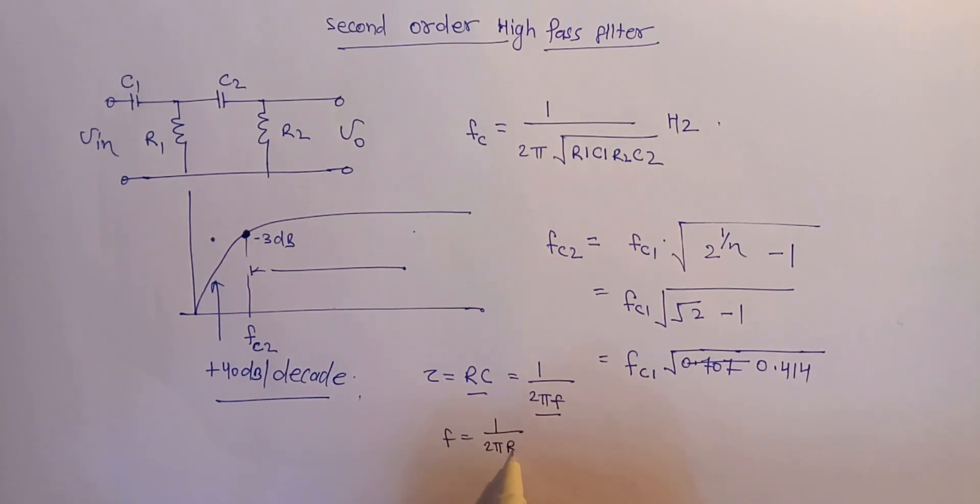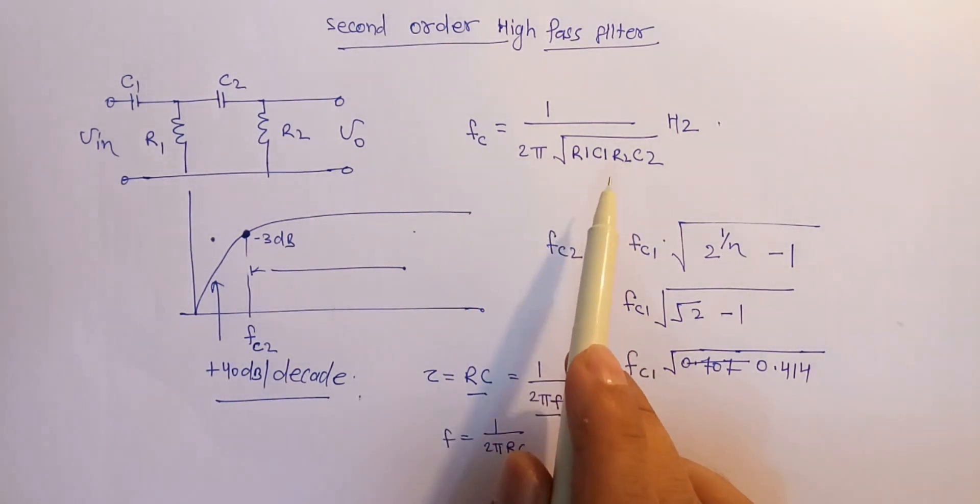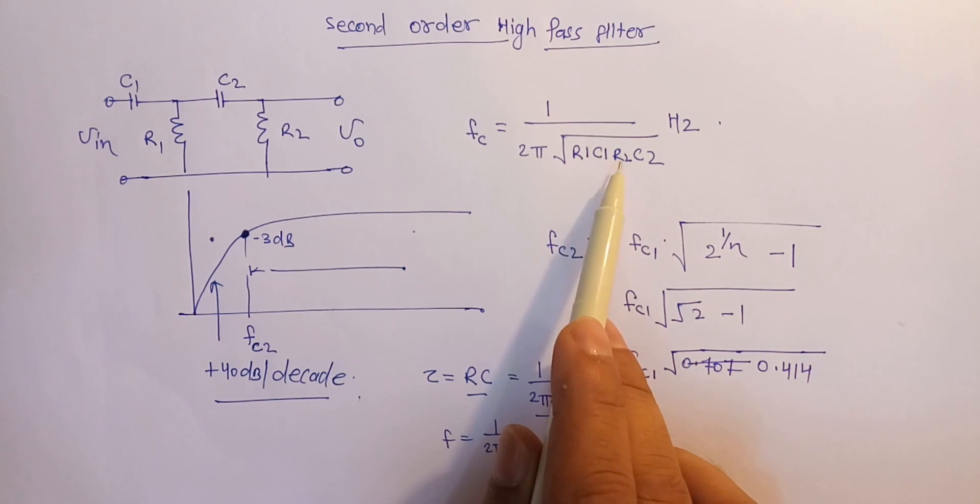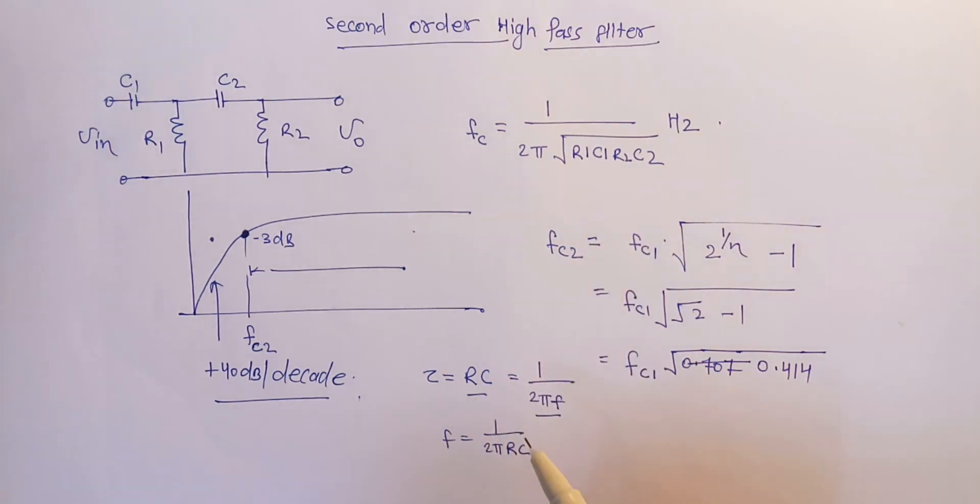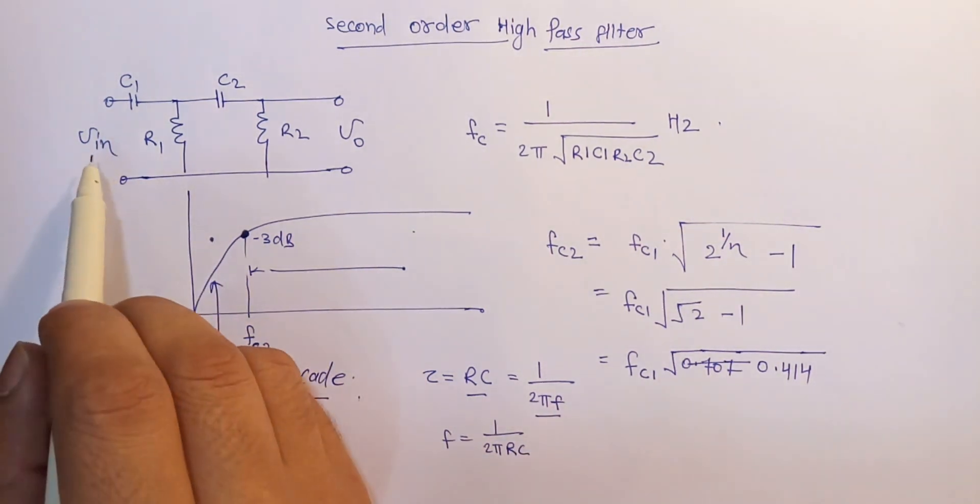2 pi RC for a first order filter. Similarly for the second order filter there will be under root R1 C1 into R2 C2.